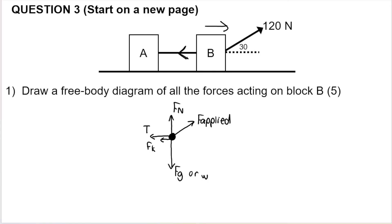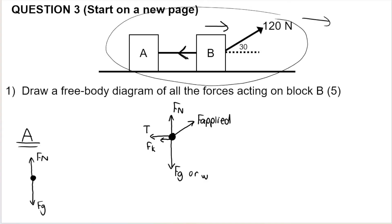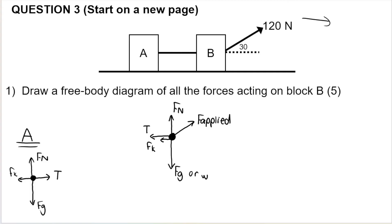If I had to draw a free body diagram for A — which the question did not ask — it would have weight going straight down, normal force going straight up, and friction going to the left since the system moves right. The tension for A goes to the right because the rope pulls A that way. The tension for B goes to the left. They go in opposite directions but have the same value — same rope, same tension, just pointing in opposite directions.